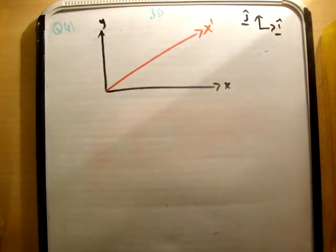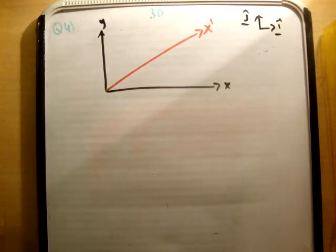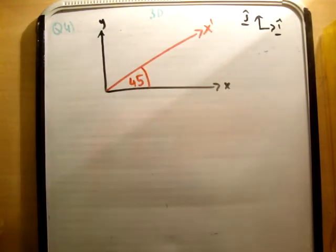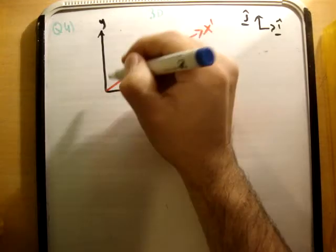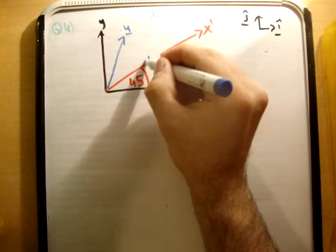So the question reads, a particle is projected from the foot of an inclined plane which makes an angle 45 degrees with the horizontal. The initial velocity is u cos alpha i hat plus u sin alpha j hat where these unit vectors are along the xy plane as I've drawn them there. The question says find the value of tan alpha if the particle lands horizontally. So we know that this is 45 degrees here and we know the angle of projection with respect to the x-axis is alpha.